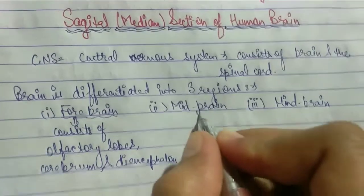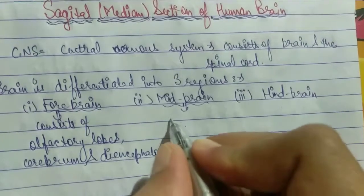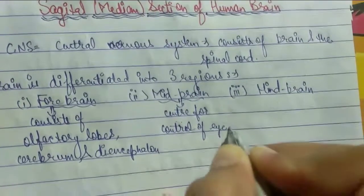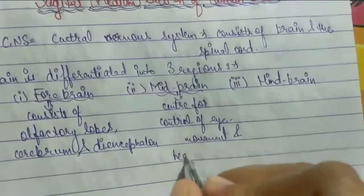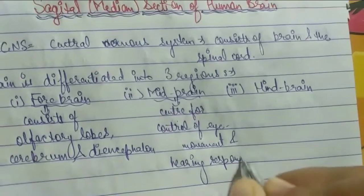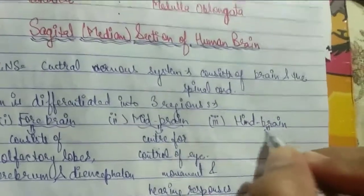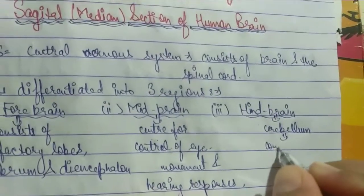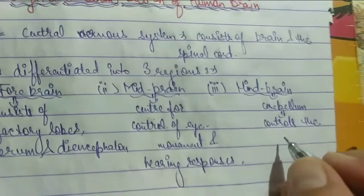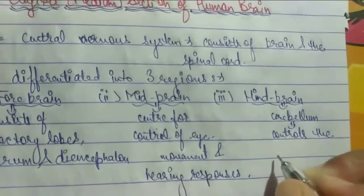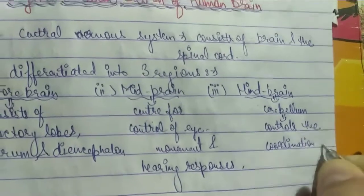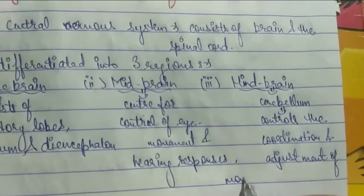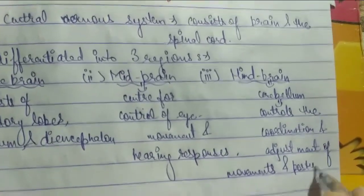The midbrain is the control center for eye and hearing responses. The hindbrain consists of the cerebellum, which controls the coordination and adjustment of movements and posture.